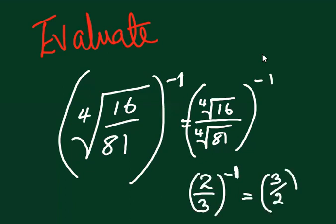So the answer will end up being three over two, which you can convert to one and one over two. This is what we are going to get.